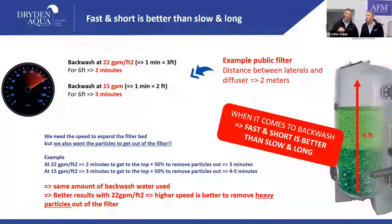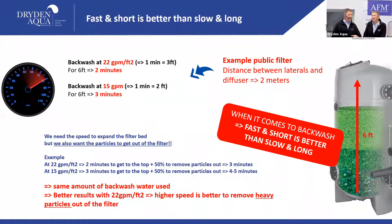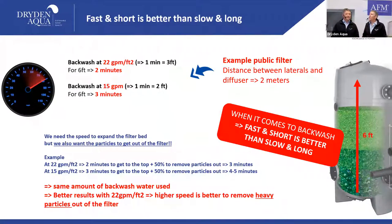With two possibilities — 20 GPM or 15 GPM — fast and short is better than slow and long for backwash. Why? Because you need the expansion of the filter bed and you need the flow to release particles out of the bed and get them out of the filter. Some of these particles are quite heavy — at very low flow you may fluidize the bed, but you still need the friction to bring them to the top and wash them out.